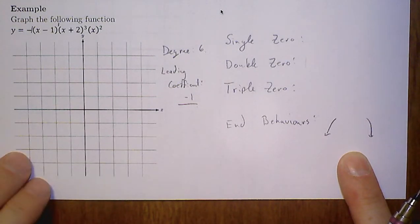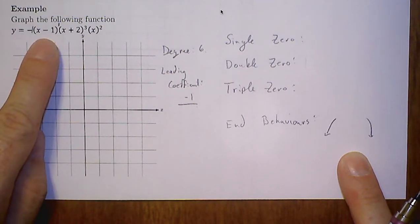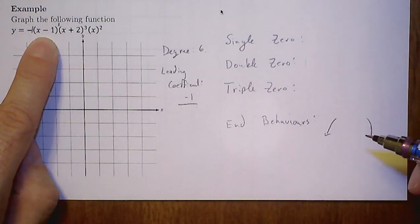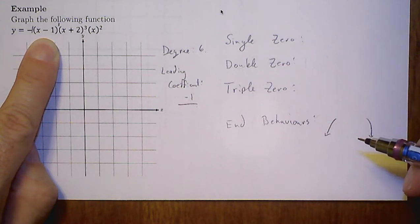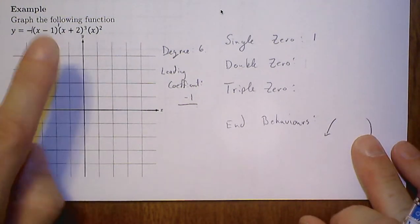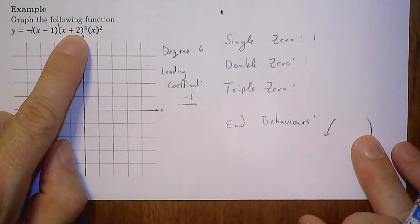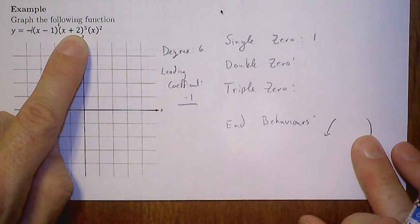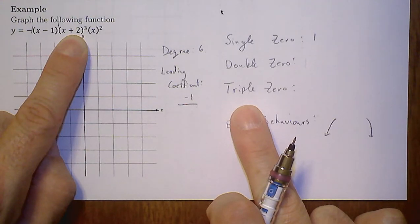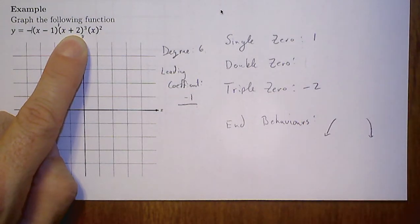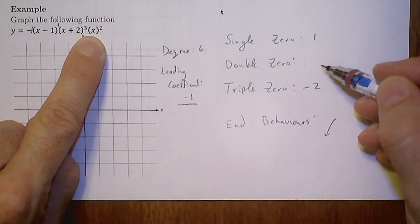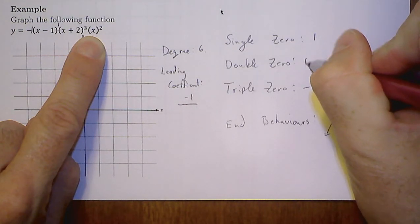Now I'm going to start picking out my zeros. This factor has a multiplicity of 1, or the exponent is 1. When is this factor equal to 0? This is my single zero, when x is equal to 1. This is degree 3, a multiplicity of 3. This is going to be a triple zero when x is negative 2. This factor is raised to the exponent 2, so this will be our double zero when we have a double zero at 0.